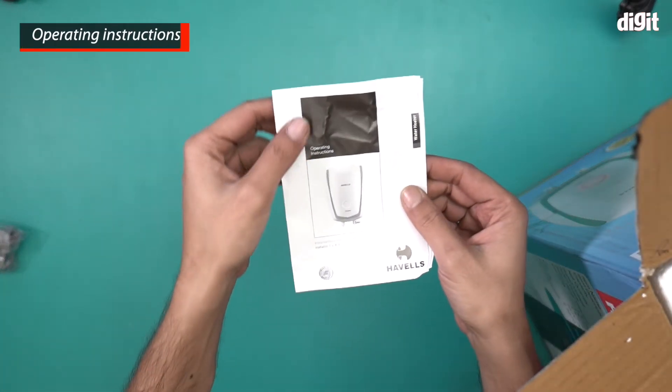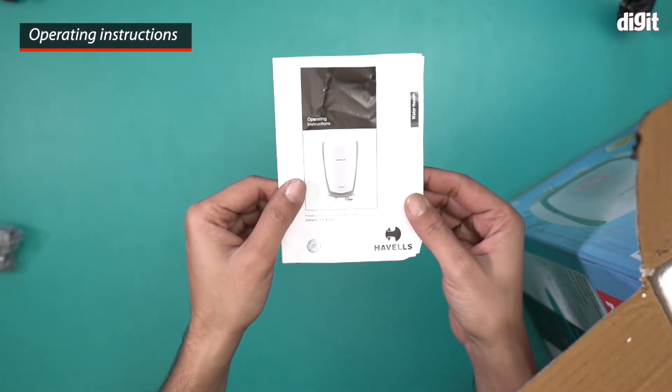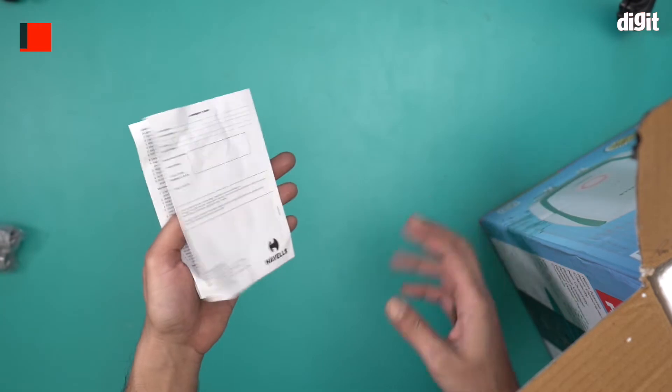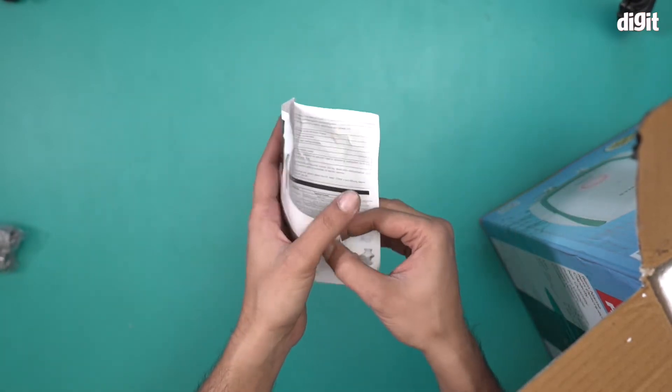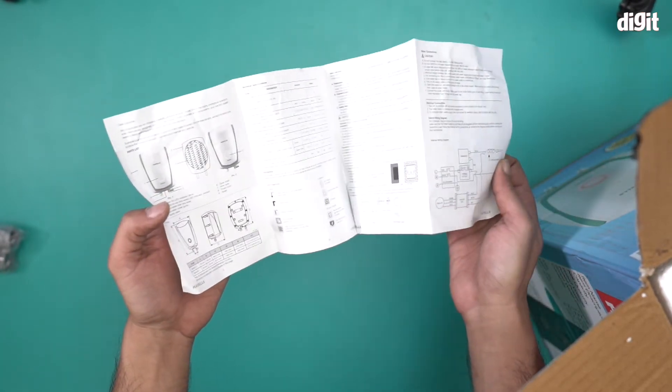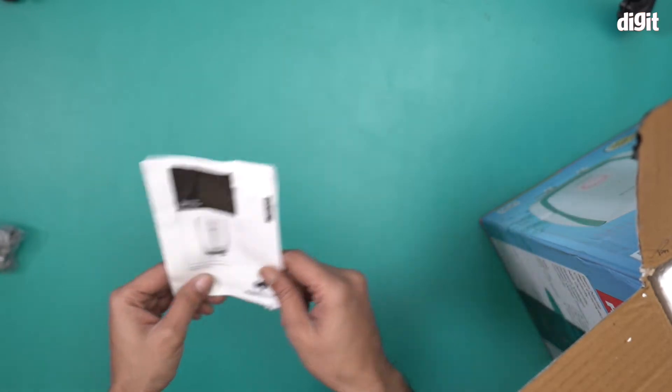We also have operating instructions for the Havells Instanio 1-liter and 3-liter models. This is the 3-liter. Everything you need to know is mentioned in this document, so it's very important.